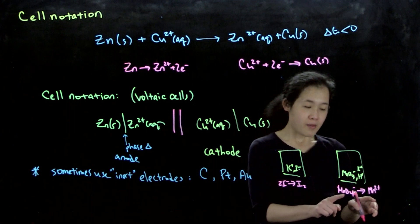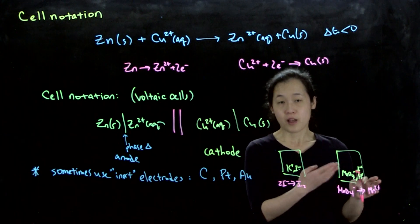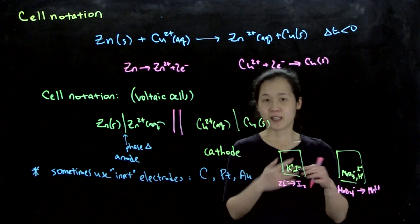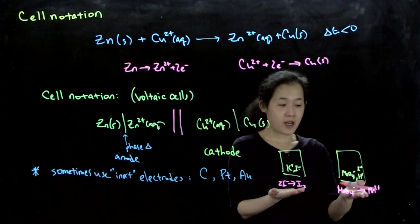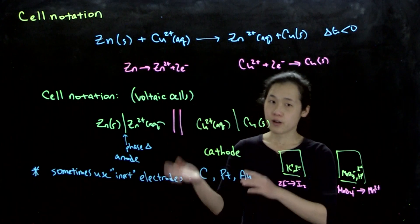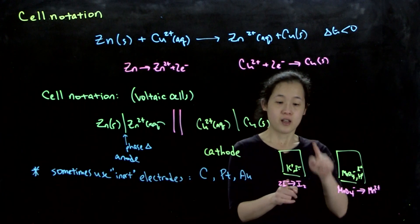The point is that permanganate and manganese 2+ are both in solution - both aqueous ions. And iodine is a solid, but not a nice metal bar. As a result, you can't really use either of these as their own electrodes. This is when we use inert electrodes.